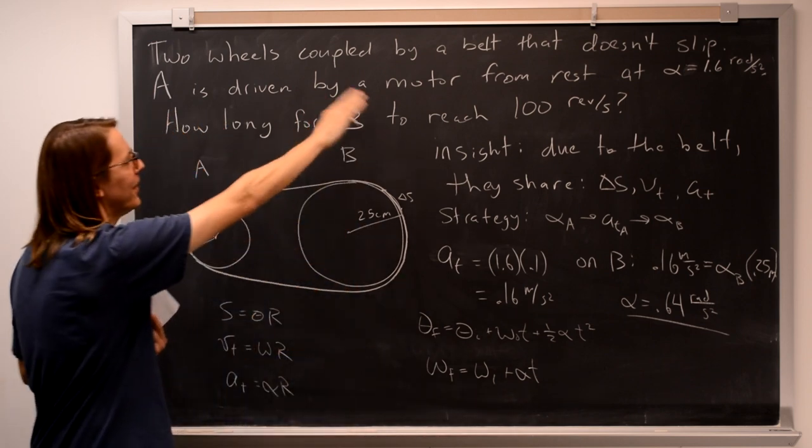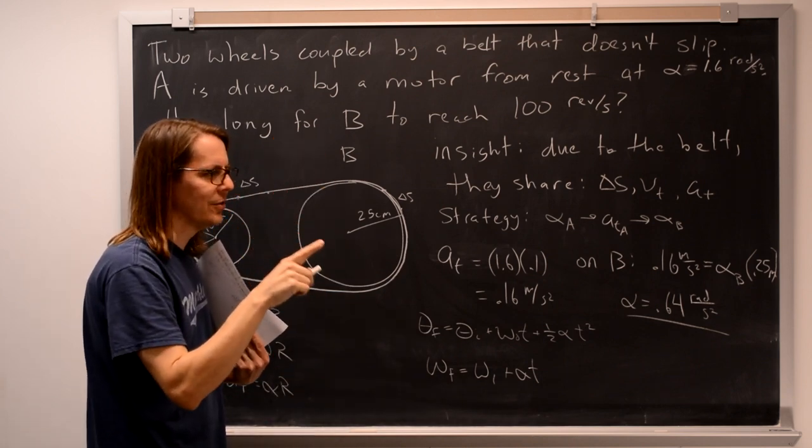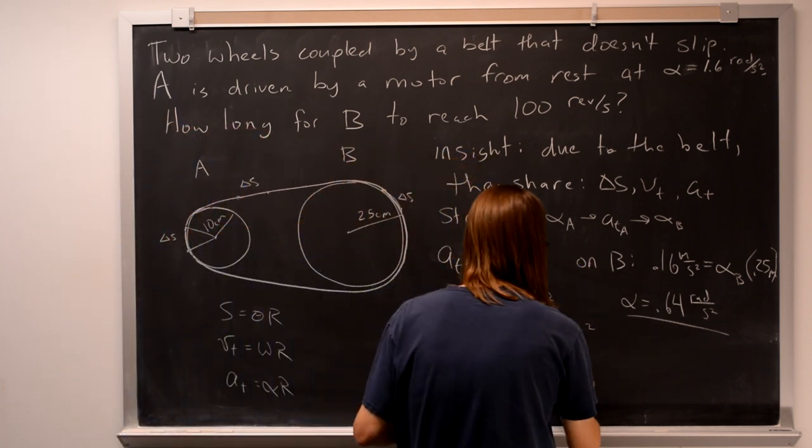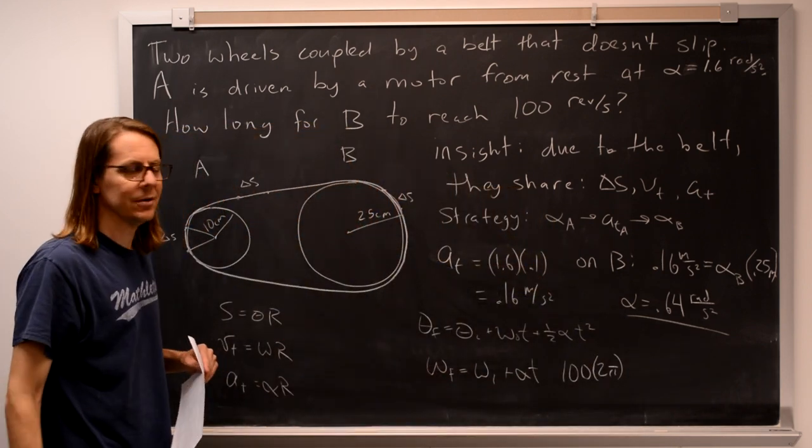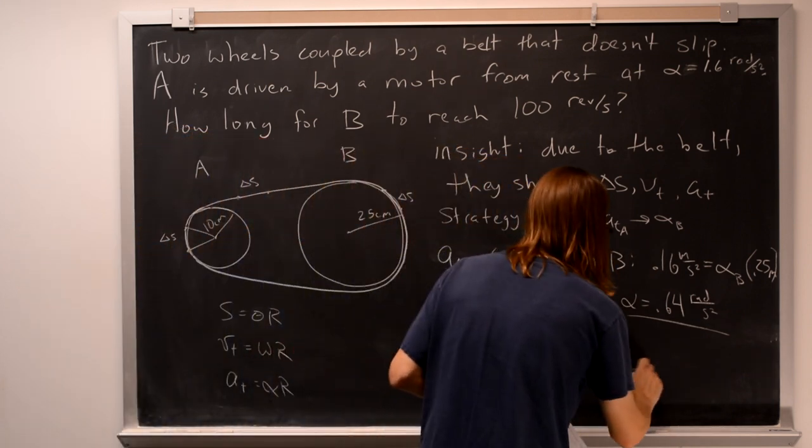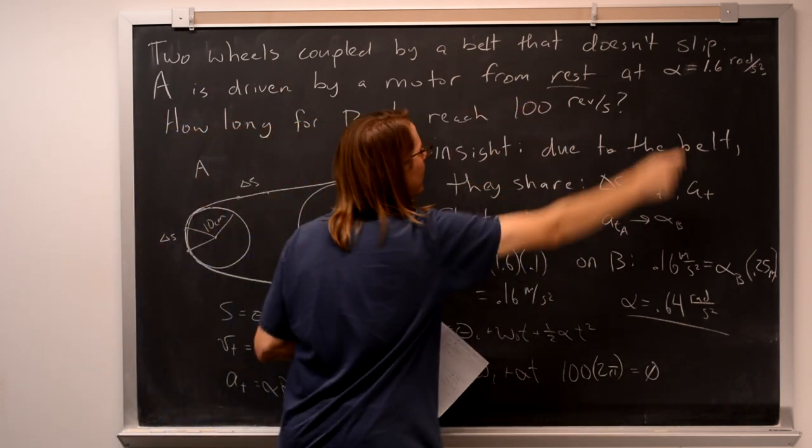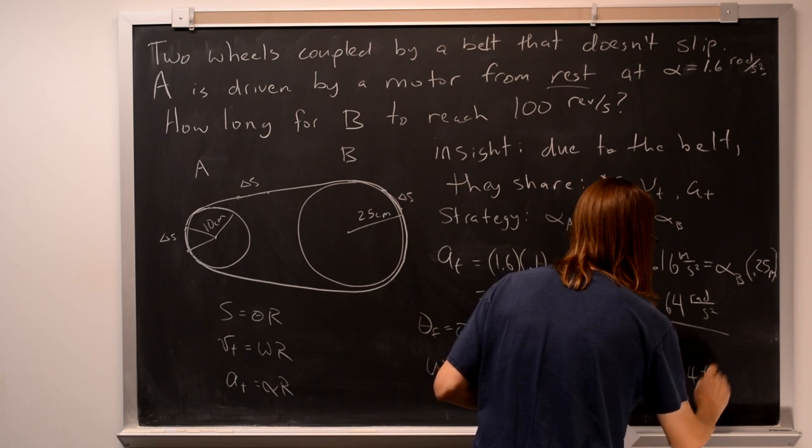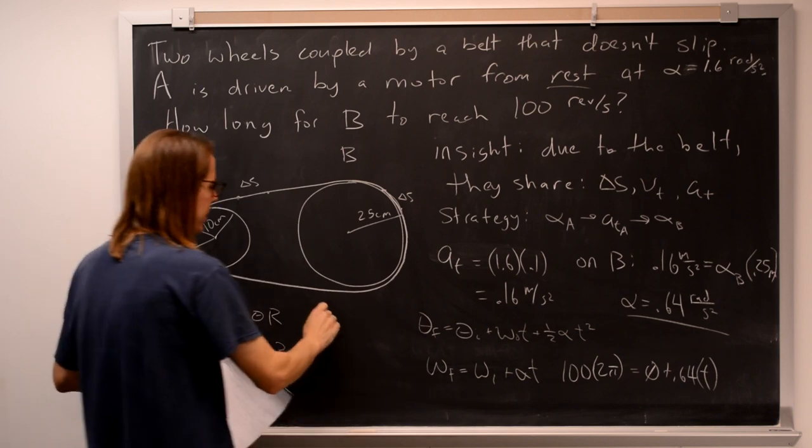Omega final equals omega initial plus acceleration times time. So we want our omega final to be 100 revolutions per second. We need that in radians per second. So a revolution is 2 pi radians. So it's 100 times 2 pi per second. So that would be 100 times 2 pi, that's omega final in radians per second. So every revolution is 2 pi, so 100 of them is 100 times 2 pi, equals omega initial 0, because we started at rest, plus 0.64 times t. So 100 times 2 pi over 0.64, and you get 982 seconds.